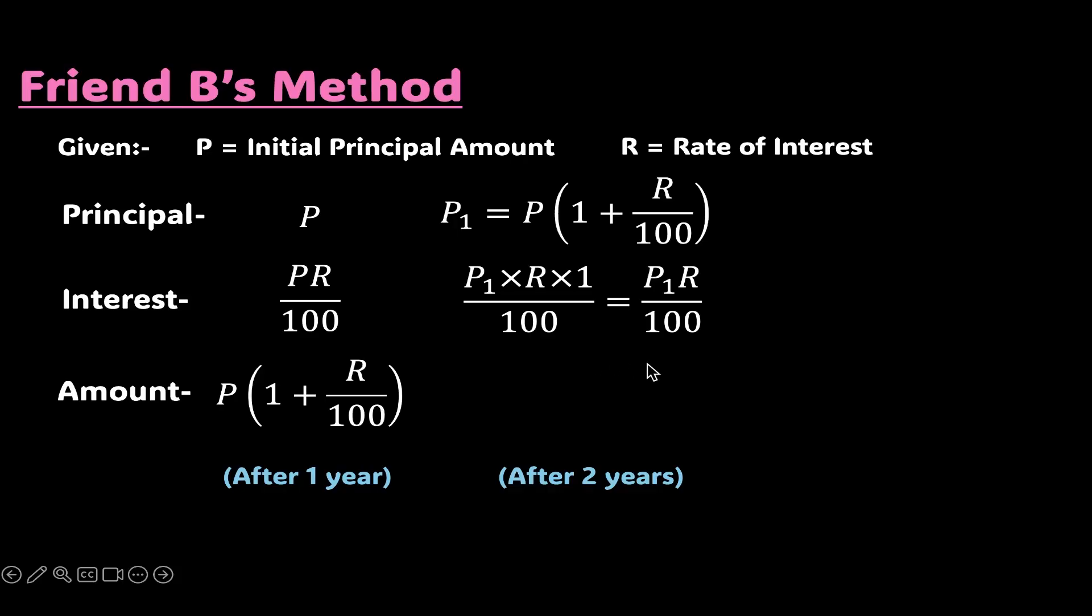But here, as you can see, we have already calculated the interest for the first year. The second year's duration is still one year. So keeping the time period of two will be incorrect.